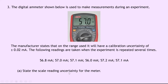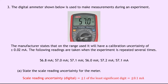Part A says state the scale reading uncertainty for the meter. Well, we can work out the scale reading uncertainty in our digital scale either by looking at the screen or the results. The scale reading uncertainty, remember, is equal to plus or minus 1 of the least significant digit, which is going to be when this 0 value takes a 1. So that gives us an answer of plus or minus 0.1 milliamps.